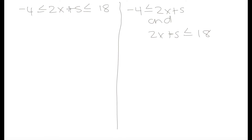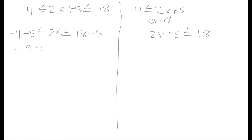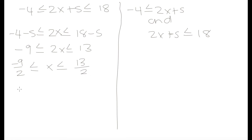The first way is to isolate our variable in the middle and move all constant terms to either side. Let's get rid of this plus 5 by subtracting 5 from each of the three parts. So we get minus 4 minus 5 is less than or equal to 2x, which is less than or equal to 18 minus 5. That gives us negative 9 is less than or equal to 2x, which is less than or equal to 13. Dividing each part by 2, we get negative 9 over 2 is less than or equal to x, which is less than or equal to 13 over 2.